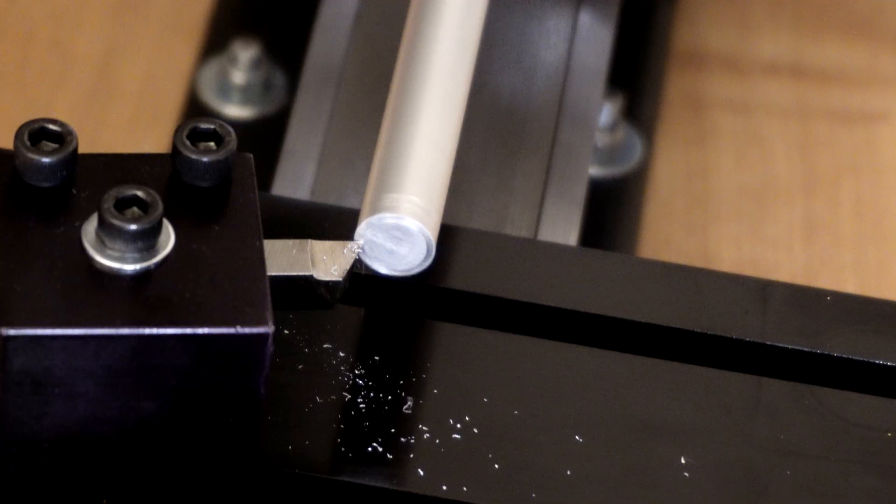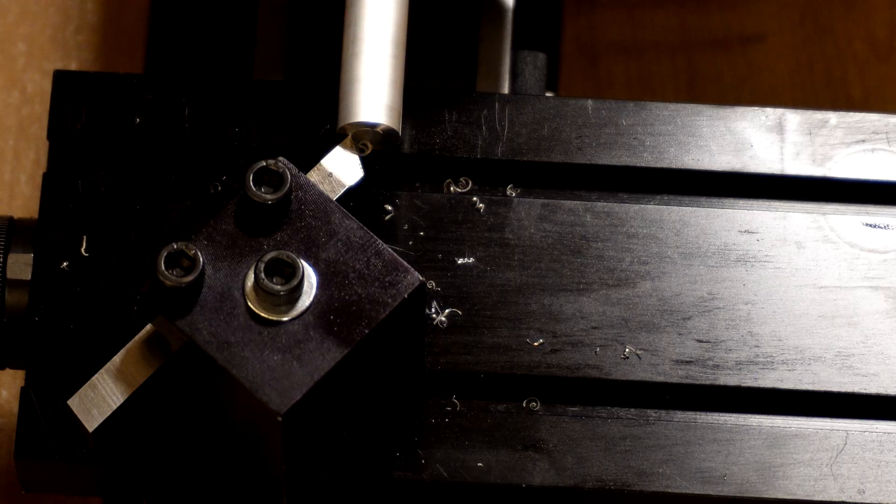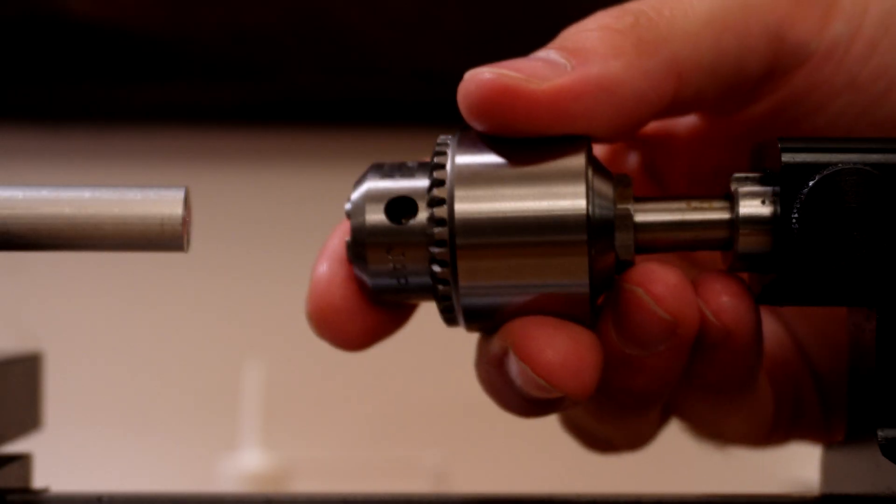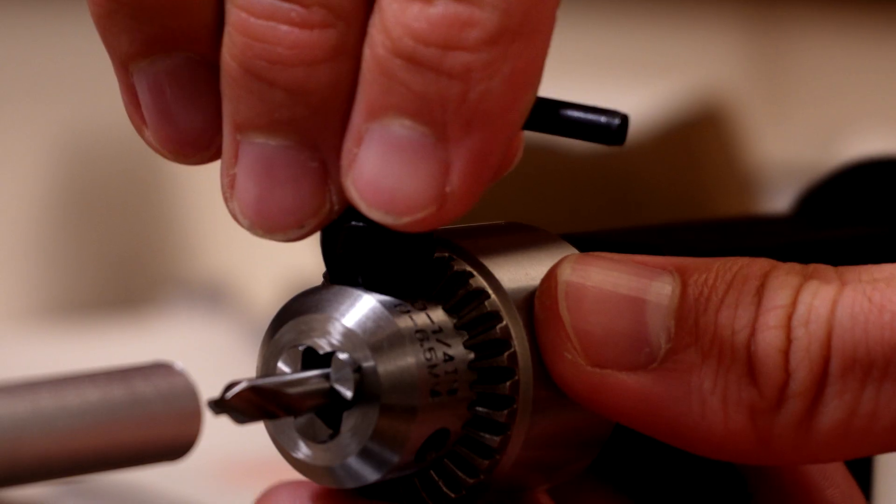Before we start turning the rod on the lathe we will support it on both ends using a live center and a tailstock. That way we can achieve the desired accuracy.